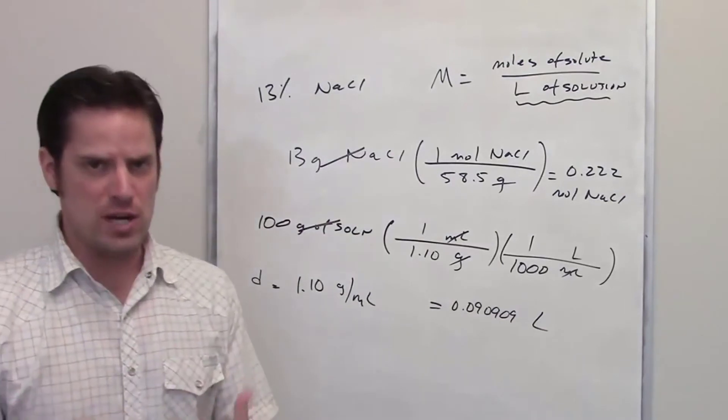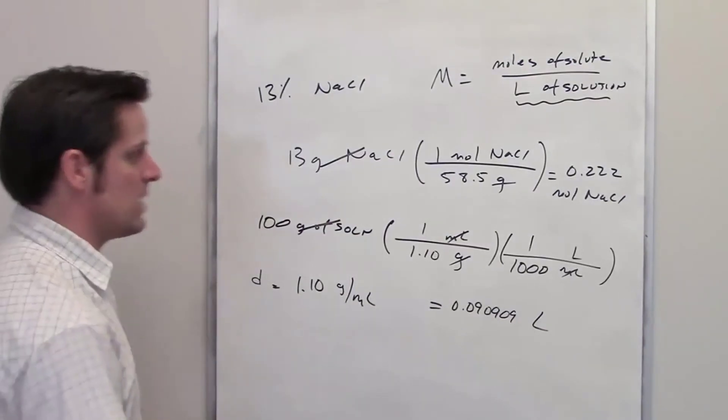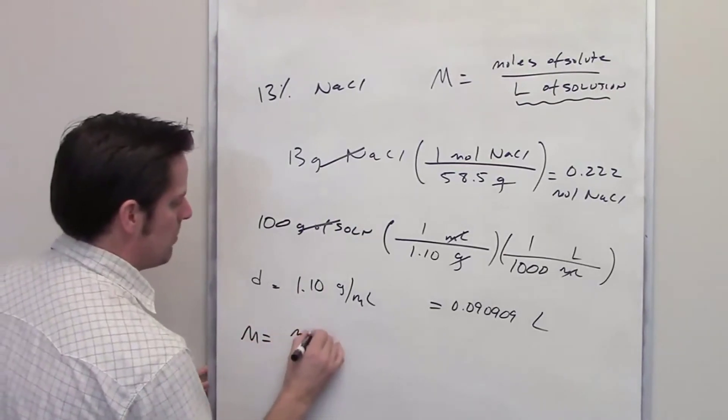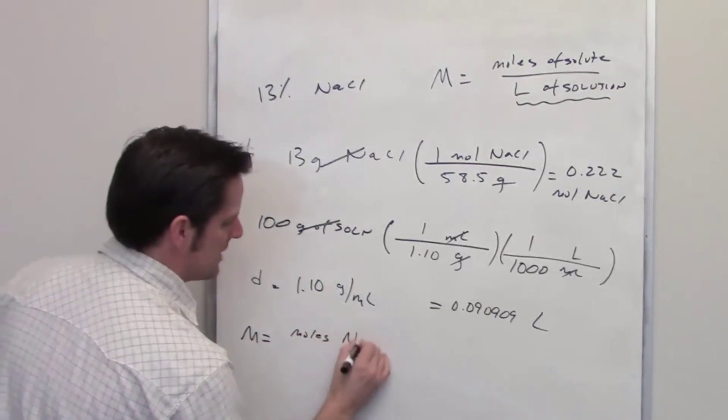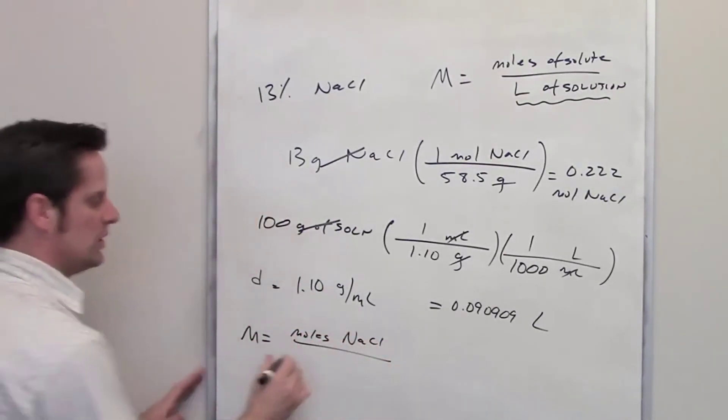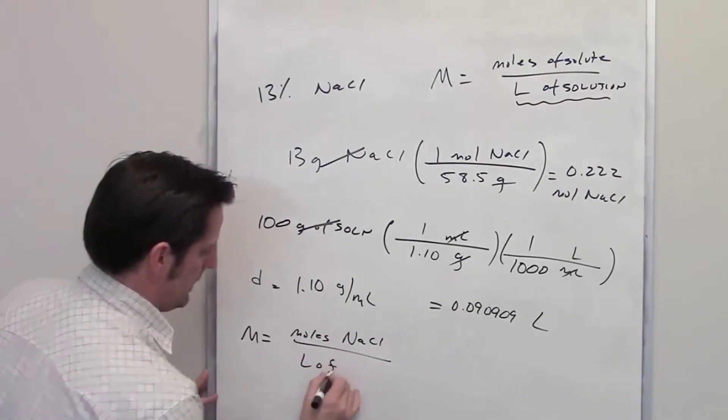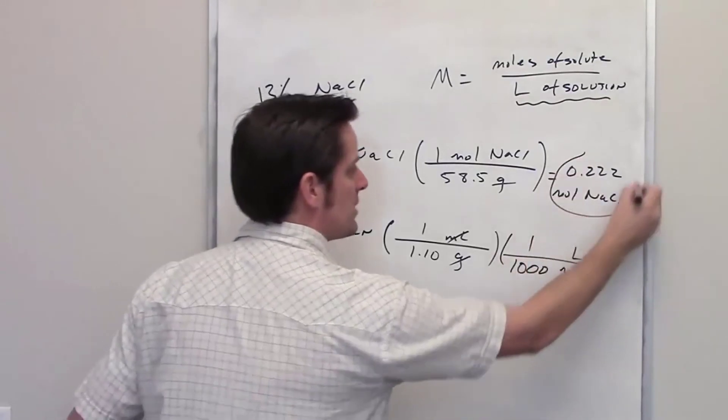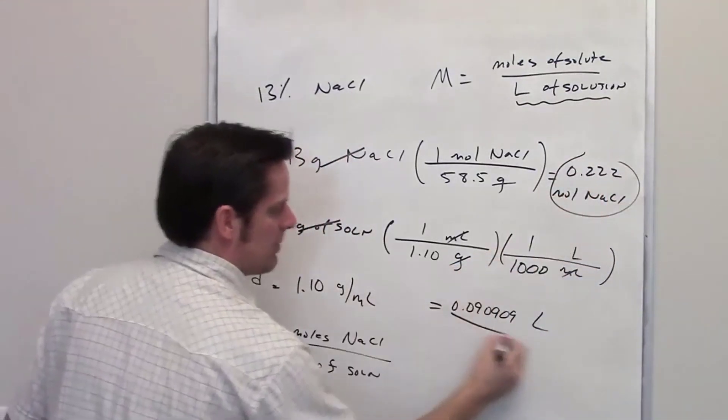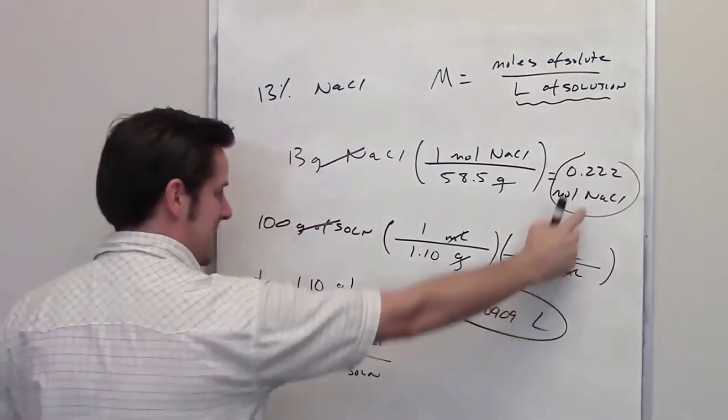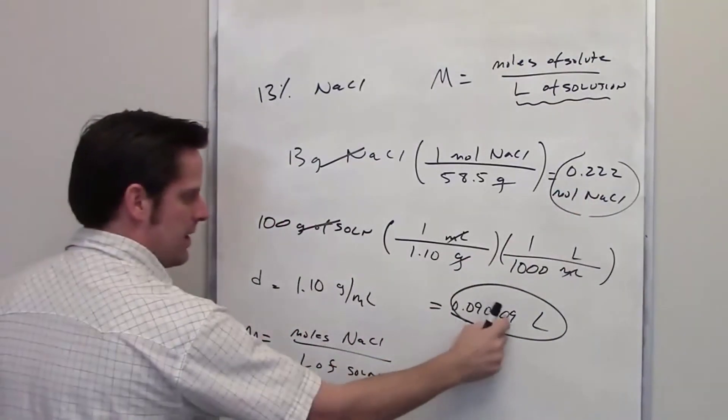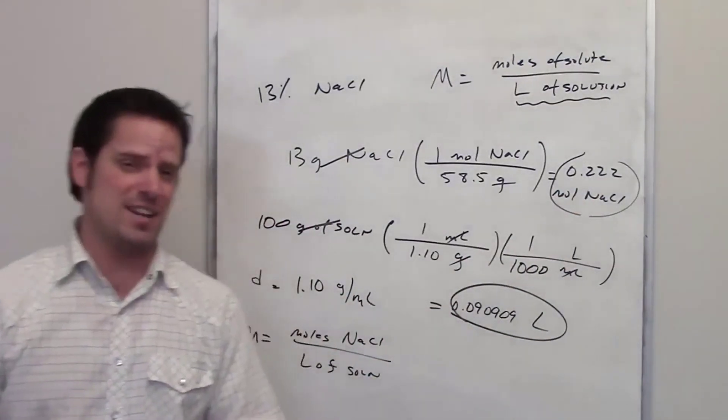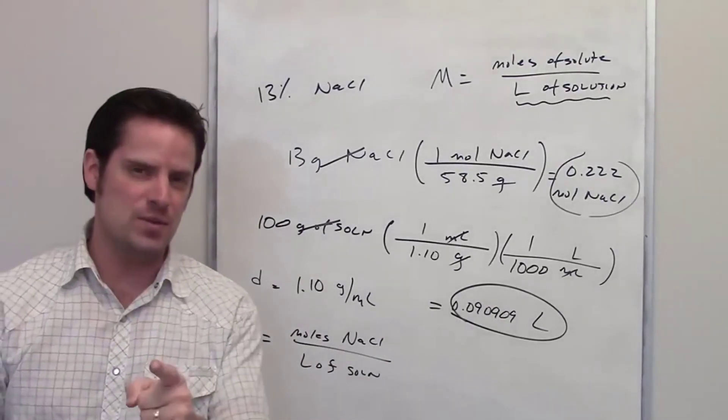Now, molarity once again is going to be equal to moles of solute, in this case sodium chloride, in total liters of solution. I've got my moles of my solute right there. I've got my liters of solution right there. So you take this number, put it on top. This number, put it on bottom. And then you get your final molarity, which is the correct answer to this question. I'll let you do that on your own.